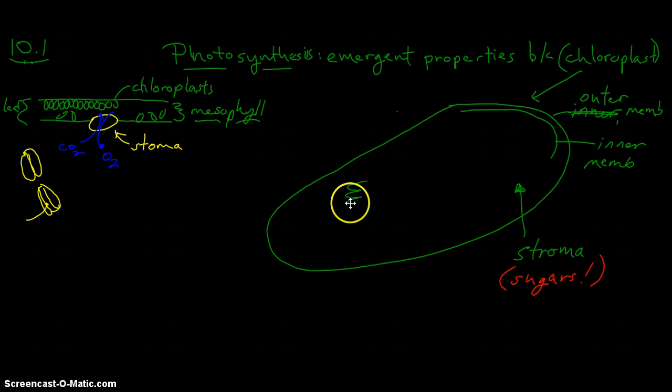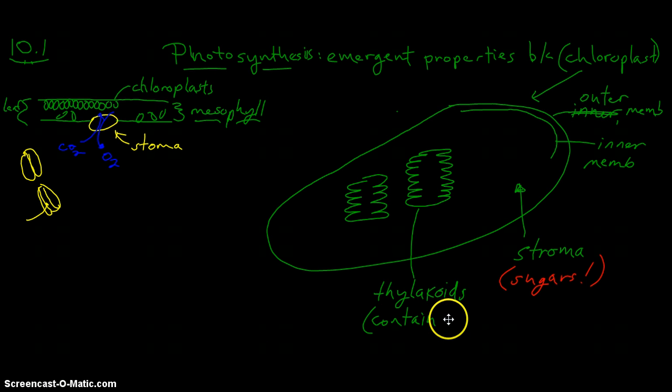Now, a clearly identifiable structure within the chloroplast itself are a series of green membranous structures. These membranes are referred to as thylakoids, and what's significant about thylakoids is that they contain chlorophyll, the green pigment that plays a prominent role in the photosynthetic process.